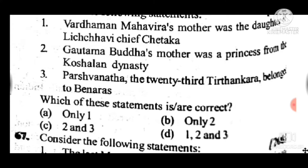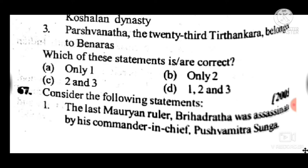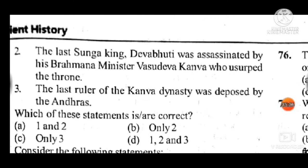Question 67: Consider three statements — the last Mauryan ruler Brihadratha was assassinated by his commander-in-chief Pushyamitra Shunga; the last Shunga king Devabhuti was assassinated by his Brahmin minister Vasudeva Kanva; and the last ruler of the Kanva dynasty was deposed by the Andhras. Answer is D — all three statements are correct.